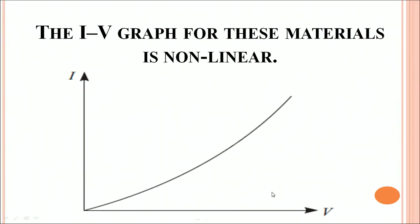If you plot a graph between V and I, the potential applied and the current which flows for semiconductors, you will find that it is a non-linear graph. It is not a straight line. So, you cannot say that Ohm's law is being satisfied for these materials.